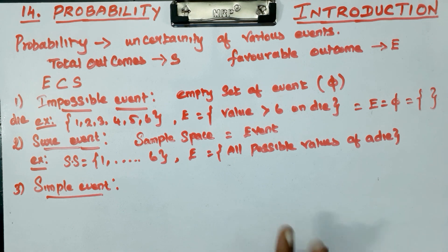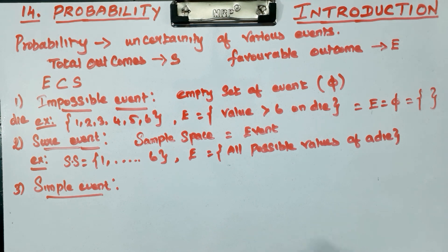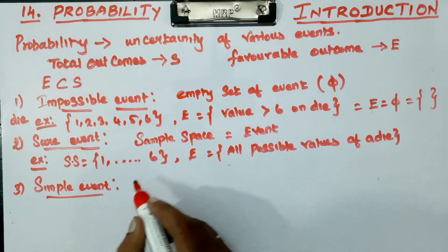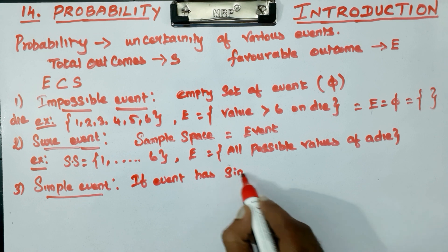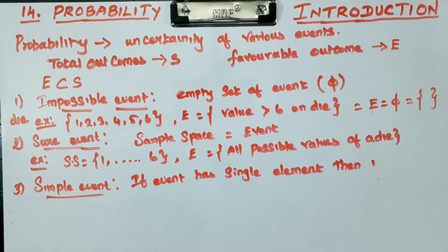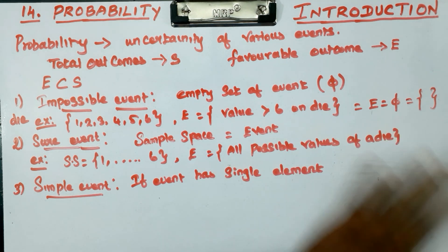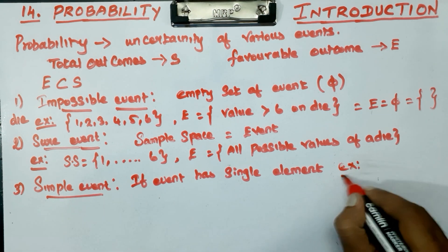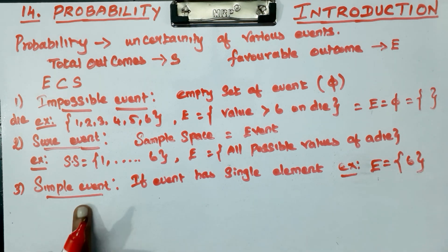Next is the simple event. If an event has a single element, then it is called a simple event. For example, if event E contains only one number, such as E = {6}, that is a simple event - it has only one element.